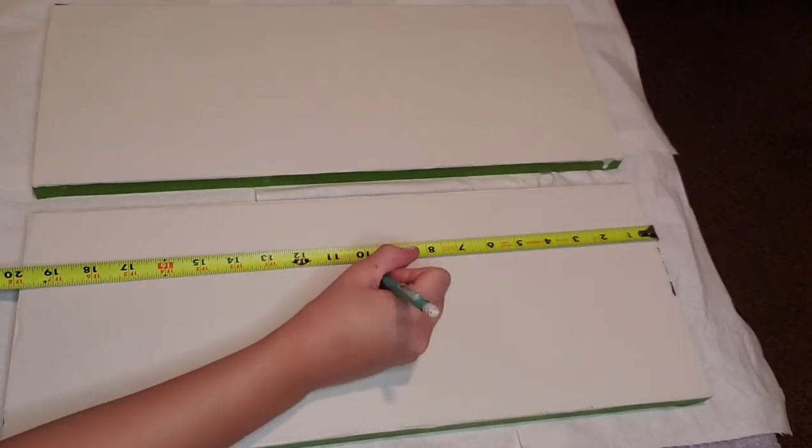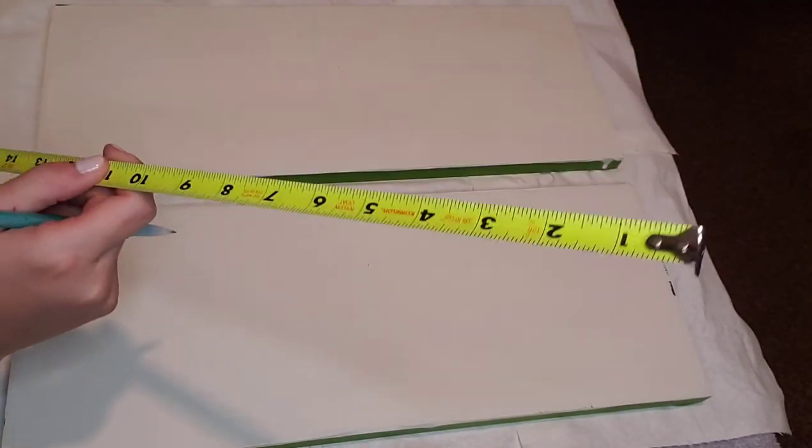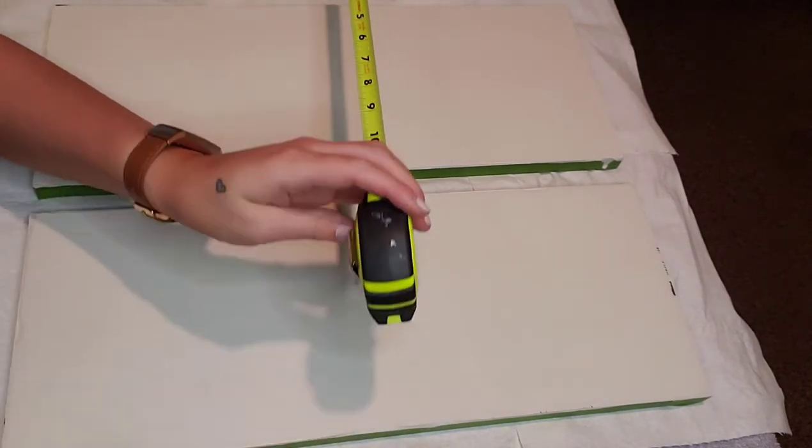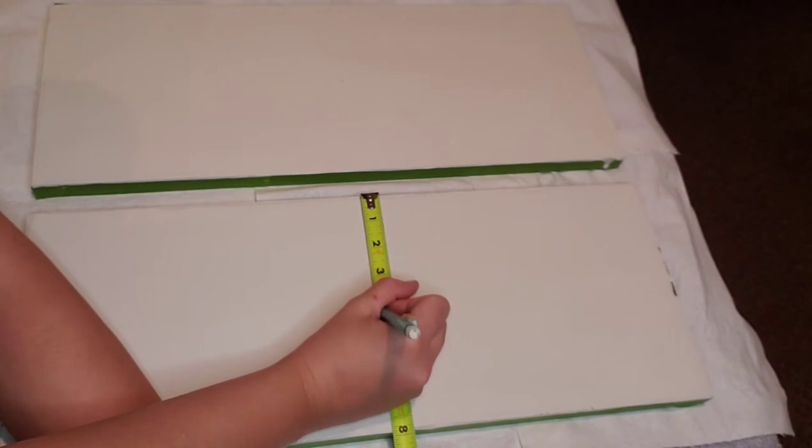Using a measuring tape, I found the exact center of each piece once the paint was dry, so I would know where to start the center of the sun and the center of the moon so they would be even with each other.